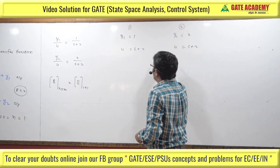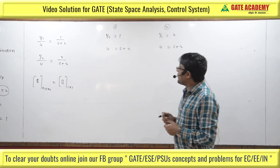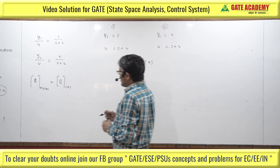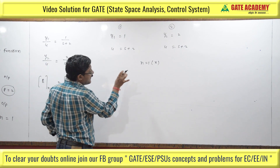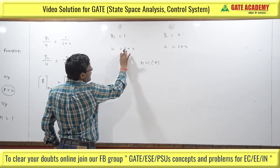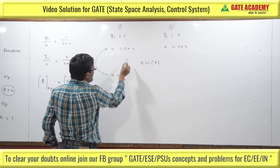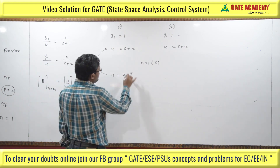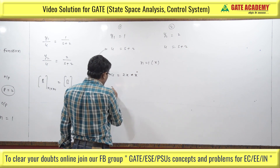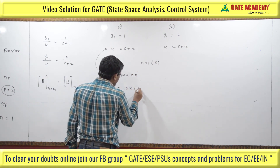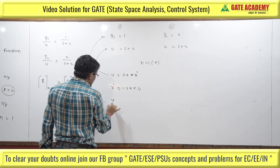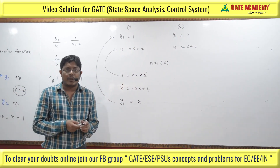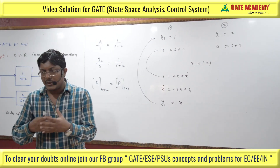Using the direct decomposition method: the order of the transfer function is 1 and the denominator is (s+2). With one state variable x, the constant term represents the state variable and the derivative is x-dot. So cross-multiplying, x-dot = -2x + u, and y1 = x. This is the direct decomposition method — a state variable representation style where you compare numerator and denominator terms.